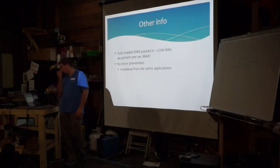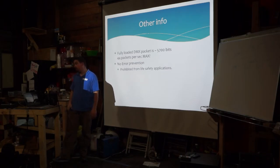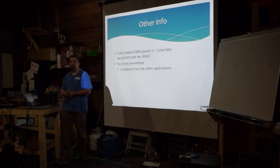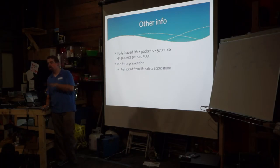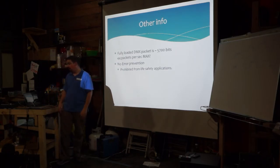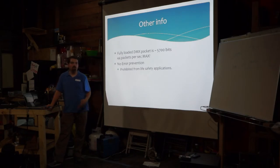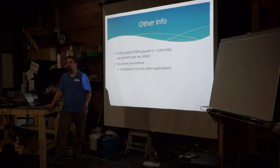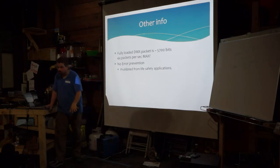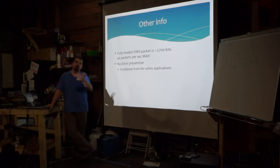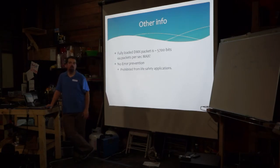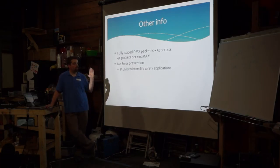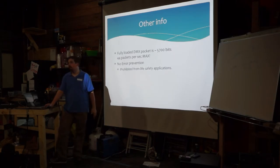Fully loaded, DMX is 5700 bits at 44 packets per second. There's no error checking — no CRC checks. That's why the DMX standard prohibits its use for life safety applications. You can't use it for rigging, pyrotechnics, moving stages, or closing motors. If the lights come on and something goes wrong, because there's no protection in the design, you simply can't trust it for safety-critical functions.